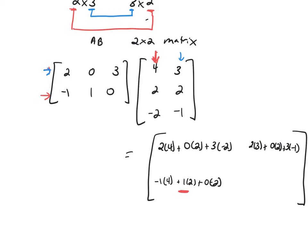Okay, and then the final entry right here. You're going to take the second row and the second column. Multiply the corresponding entries together. So negative 1 times 3, 1 times 2, 0 times negative 1.